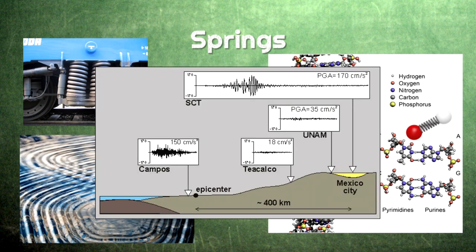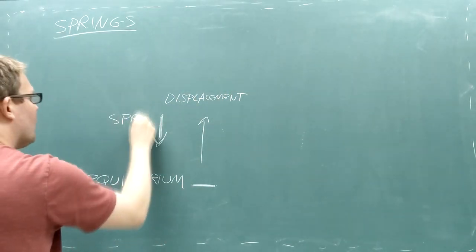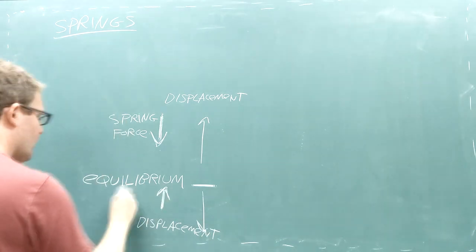In physics, a spring is anything that obeys the simple rule that displacing an object from equilibrium creates a force that pulls the object back to equilibrium.